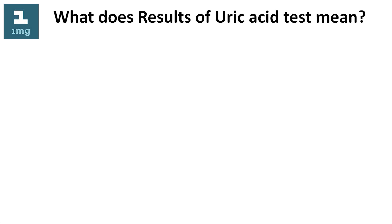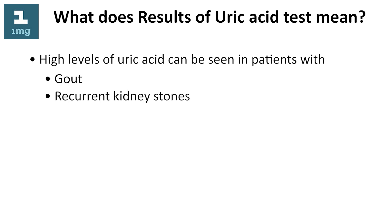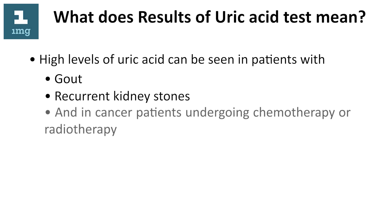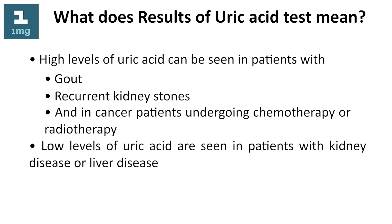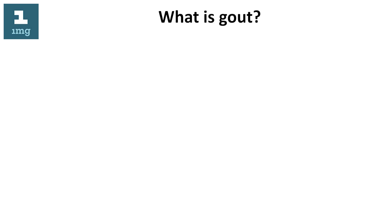What do the results of a uric acid test mean? High levels of uric acid can be seen in patients with gout, recurrent kidney stones, and in cancer patients undergoing chemotherapy or radiotherapy. Low levels of uric acid are seen in patients with kidney disease or liver disease.